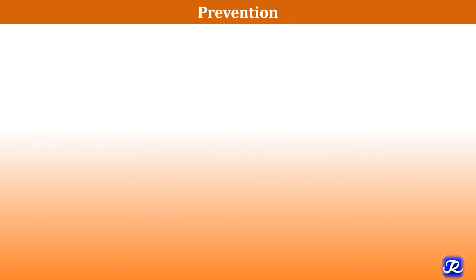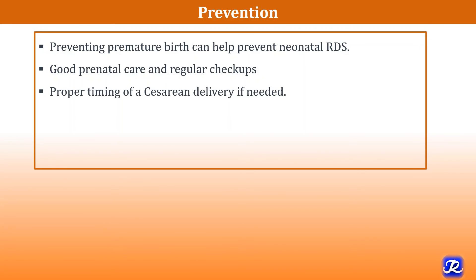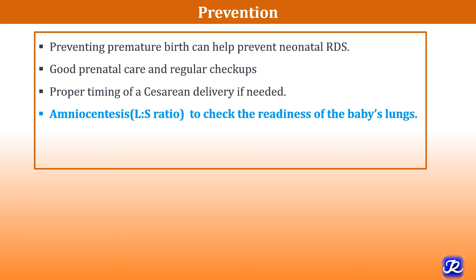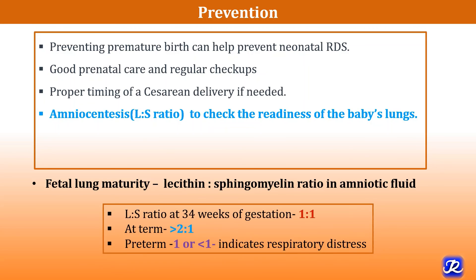Can neonatal RDS be prevented? Yes. Preventing premature birth can help prevent neonatal RDS. Good prenatal care and regular checkups are required, along with proper timing of caesarean delivery. Amniocentesis — collection of amniotic fluid for analysis — and the lecithin to sphingomyelin (LS) ratio can be used to check the readiness of the baby's lungs. Fetal lung maturity is assessed by measuring the LS ratio in the amniotic fluid.